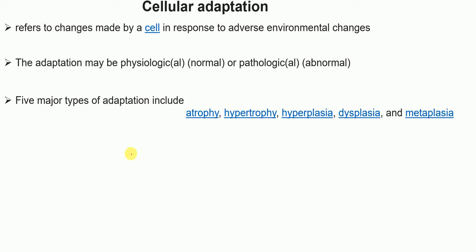In this lecture, I'm going to talk about cellular adaptation. It refers to changes made by a cell in response to adverse environmental changes — that means the cell adapts itself to the changes occurring. Cellular adaptation can be of two types: physiological adaptation (normal adaptation) or pathological adaptation (abnormal adaptation).